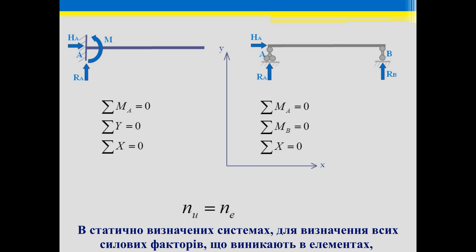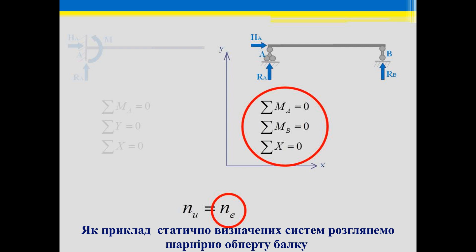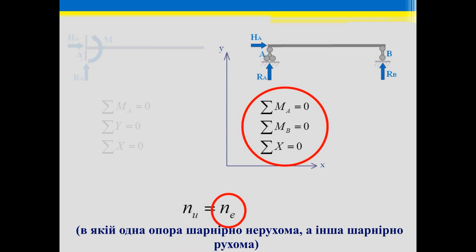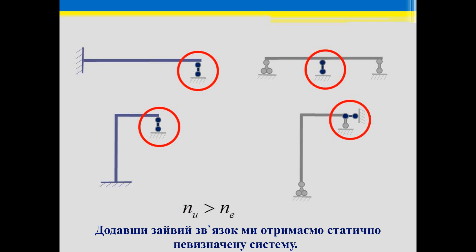If a structure is statically determinate, then all of the reactions may be calculated using equilibrium equations. An example of a statically determinate structure would be a simply supported beam, where one end is pinned and the other has a roller support, or it could be a cantilever beam. Those structures would have three unknowns.